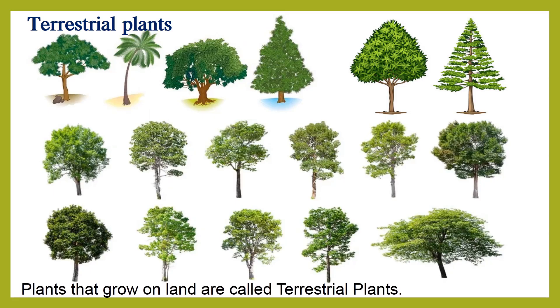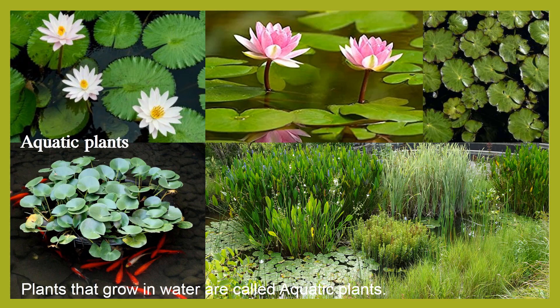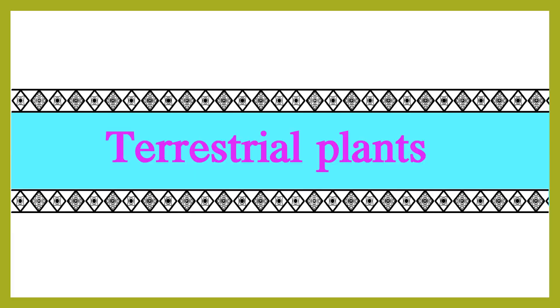First, we learn about terrestrial plants. Plants that grow on land are called terrestrial plants. Plants that grow in water are called aquatic plants. Let us now learn about terrestrial plants.